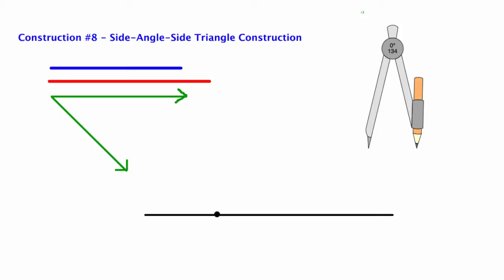Side angle side triangle construction. With the compass, I have two segments I'm going to use and an angle, and it's important to note that the angle, those are rays, that's not the length of anything, that's just the measure of an angle. But I'm going to measure the length of the first segment.